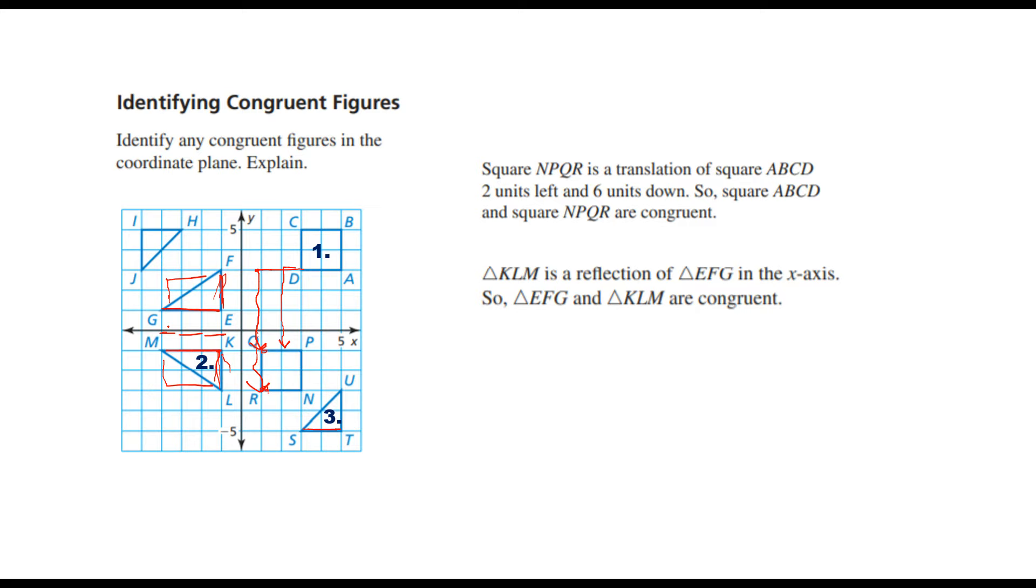Last, triangle three matches with triangle STU. Triangle STU is a 180 degree rotation of triangle H-I-J. You can imagine how that would rotate to find the next spot. So try it yourself. Identify the congruent shapes and how are they changed?